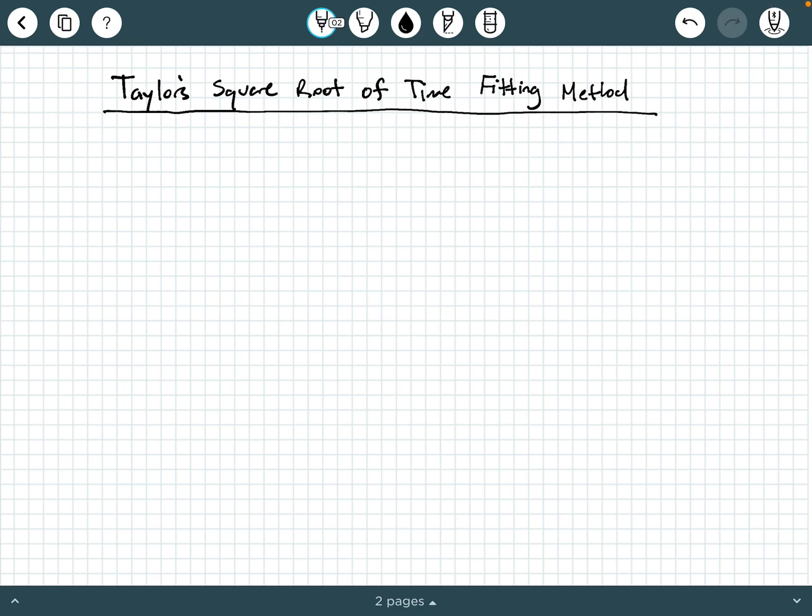In this video, we are going to be covering Taylor's square root of time fitting method. As we've mentioned before, there are two curve fitting methods when you want to determine the coefficient of consolidation. The first is the Casagrande's log of time method, and this one is the second, Taylor's square root of time method.